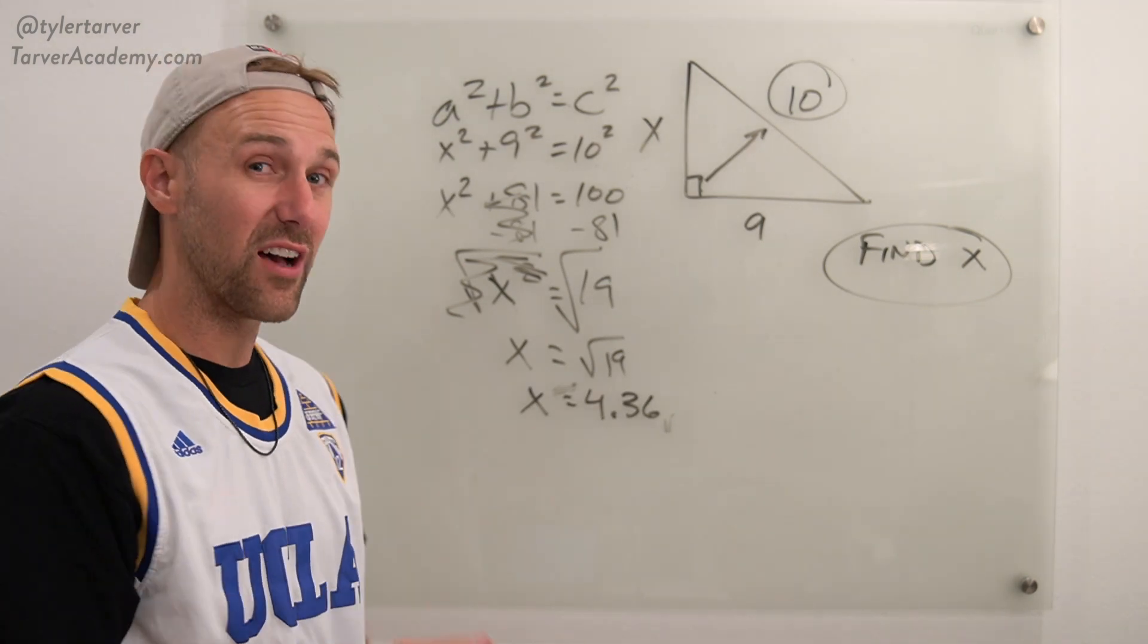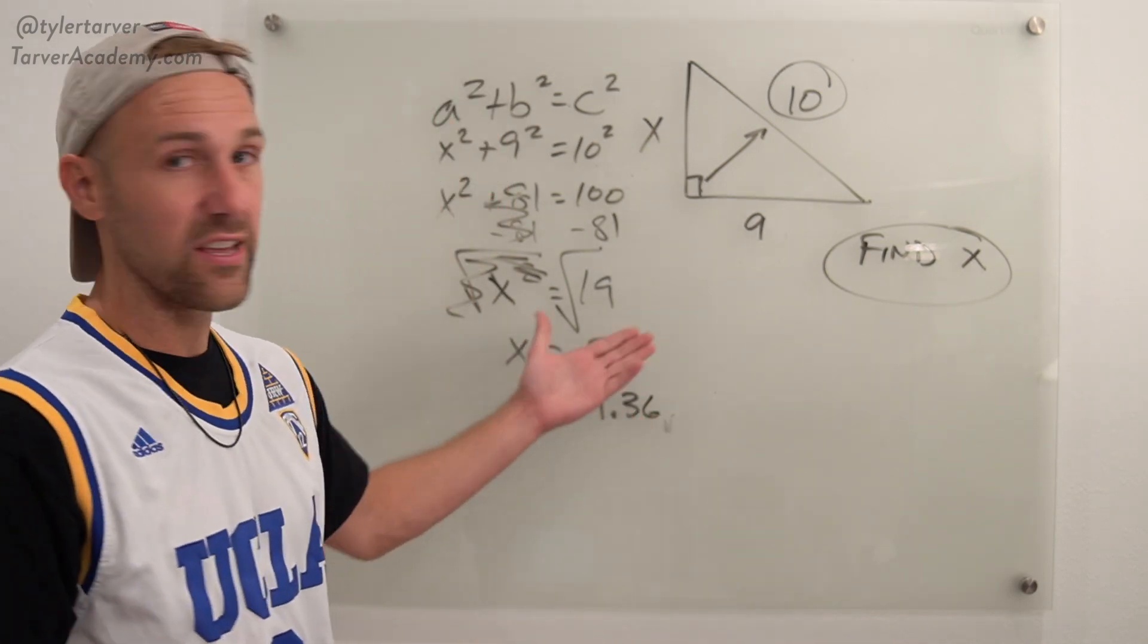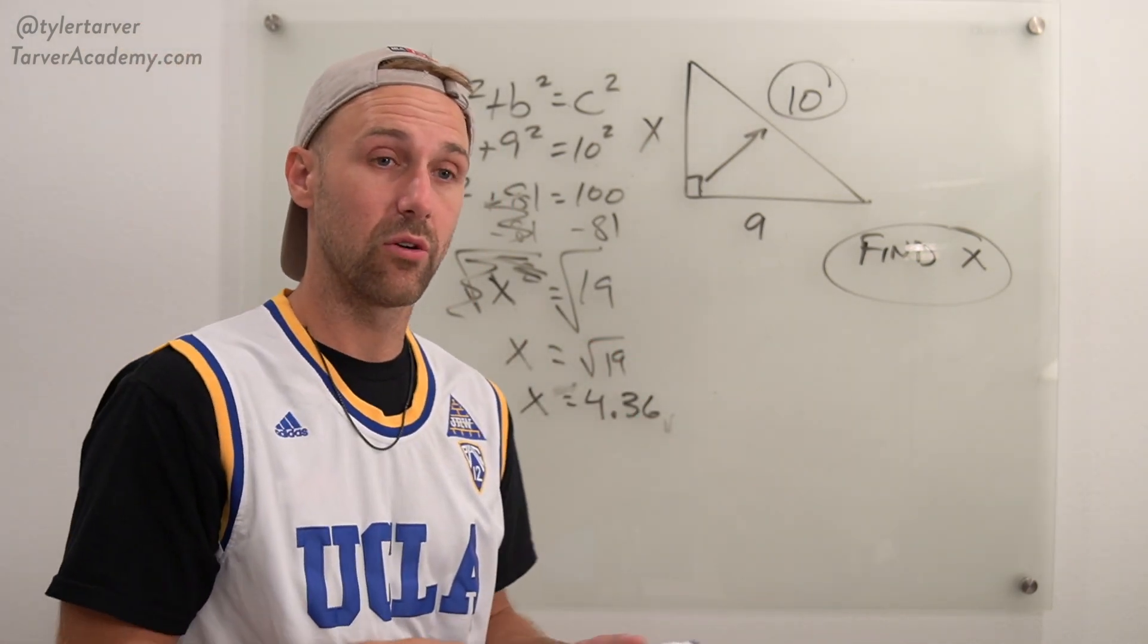They might not want that. They might want you to round to the nearest hundredth. Just look at how the example is. So if it's multiple choice, look for either option. So there you go.